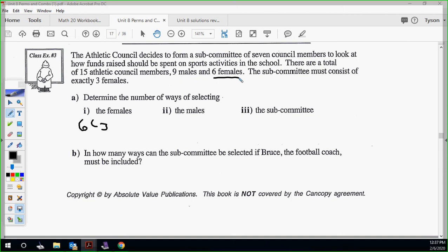The males. If we have to have exactly three females, then how many males are going to be on? Four. So then we're going 9C4. It says seven council members right here. It says exactly three females. So we know we're going for three females and four males. These numbers are—this is 20. And 9C4 is 126.